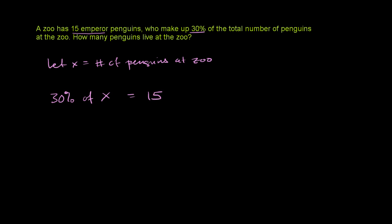Or another way of saying this is we could write that as a decimal as 0.30 of x. So 0.30 times x is equal to 15.